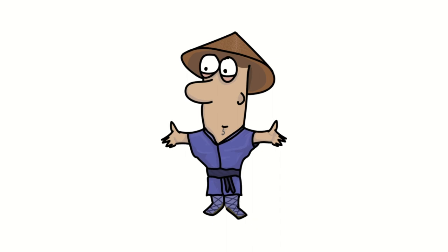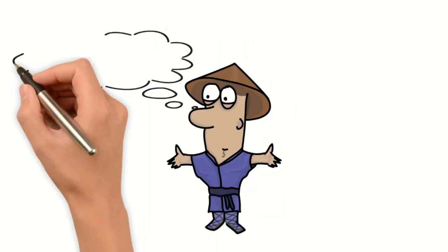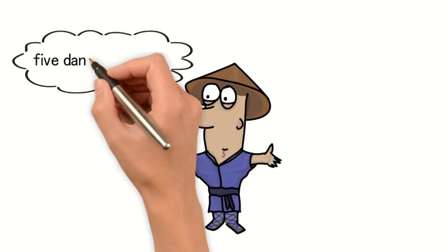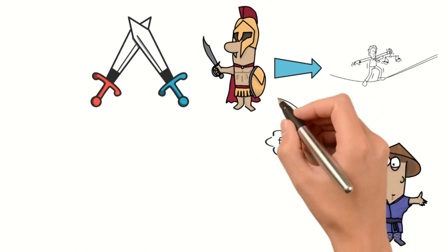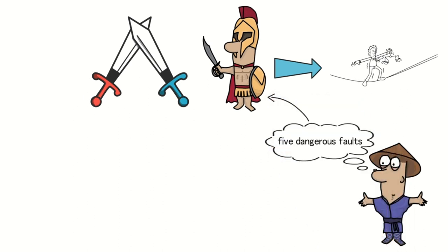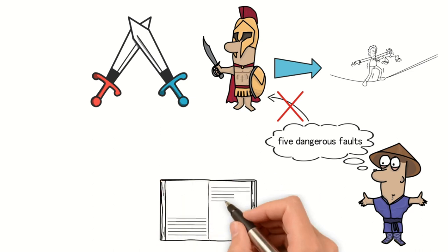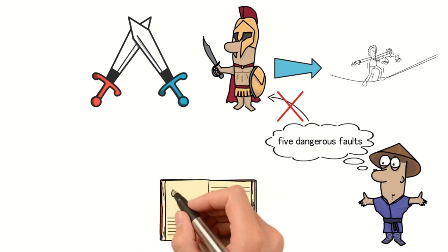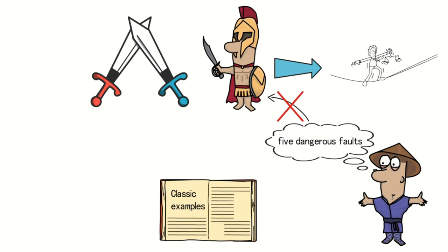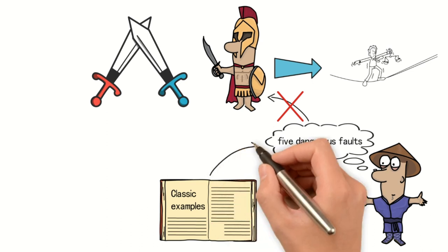Sun Tzu, in The Art of War, specifically pointed out the concept of five dangers, highlighting the five major character flaws that high-end military personnel should avoid. A series of classic historical military examples from ancient to modern times confirms the brilliance of Sun Tzu's insights.